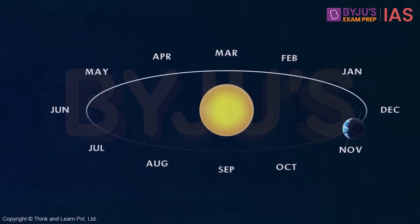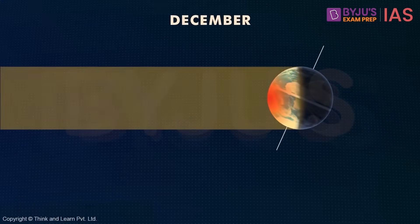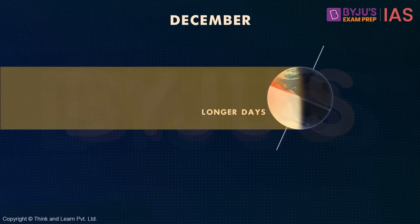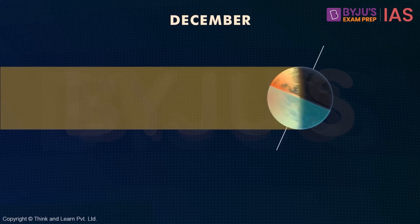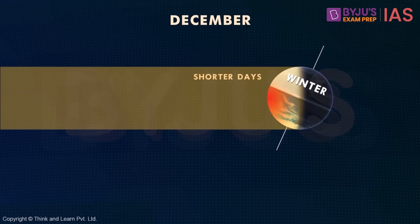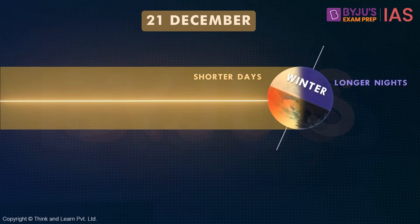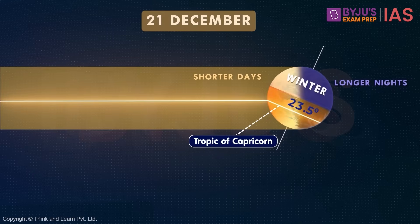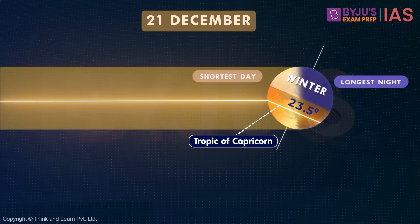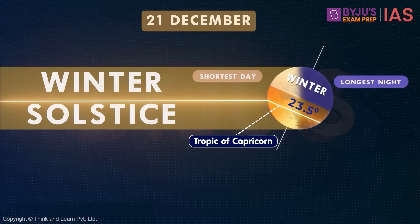The earth completes its journey and reaches this position around December. As you can see, the southern hemisphere is tilted towards the sun, and thus it will experience longer days and shorter nights. The opposite happens in the northern hemisphere — as it is tilted away from the sun, they experience the winter season, with shorter days and longer nights. On 21st December, the sun is directly overhead above the Tropic of Capricorn. On this day, the northern hemisphere will have the shortest duration of daytime and the longest duration of nighttime. This is called the December solstice or winter solstice.